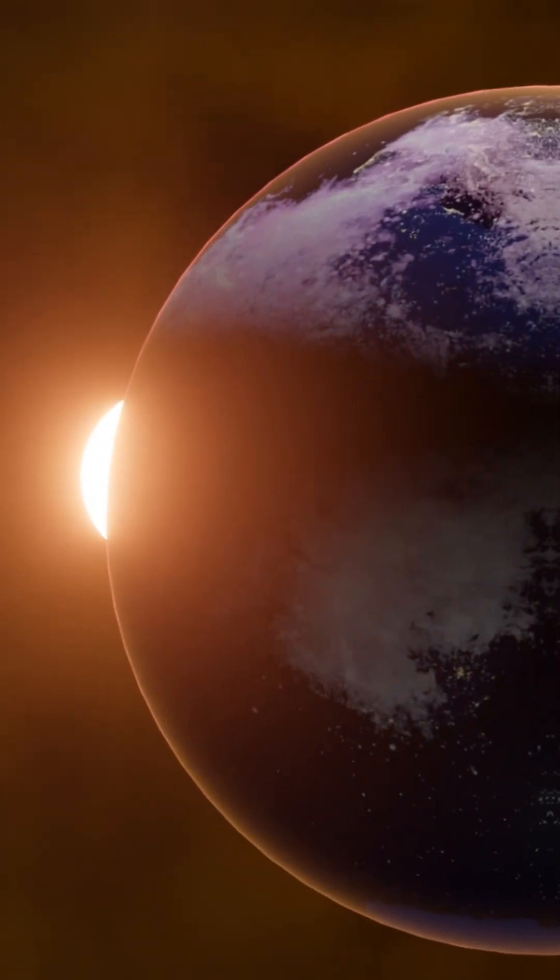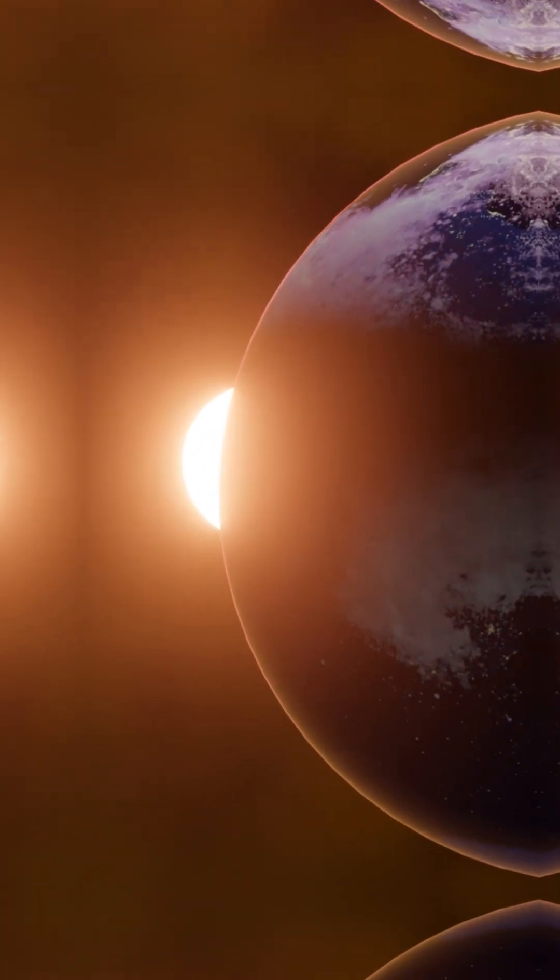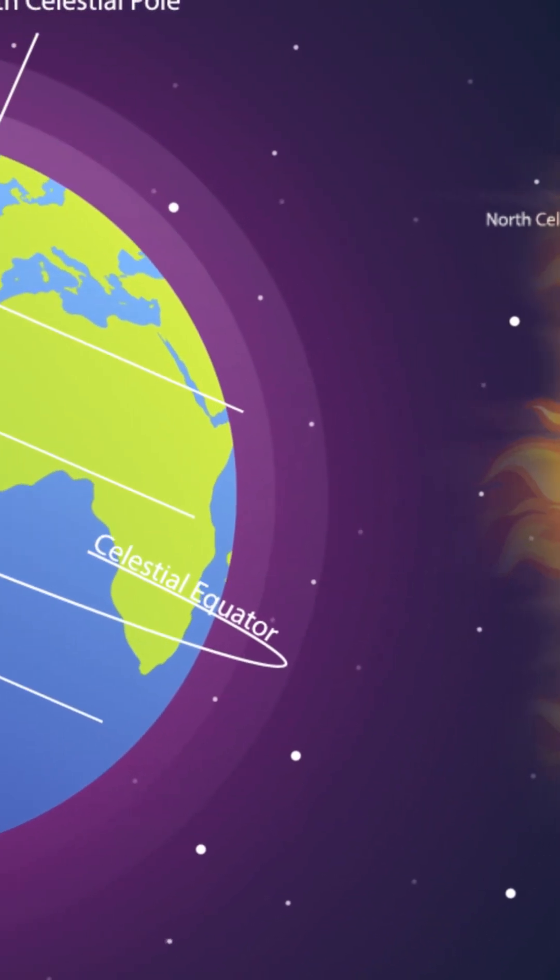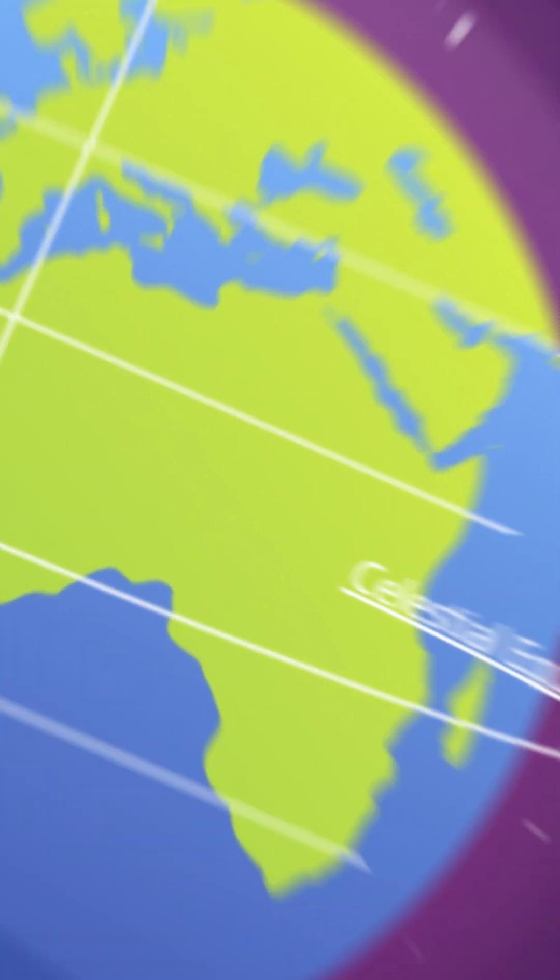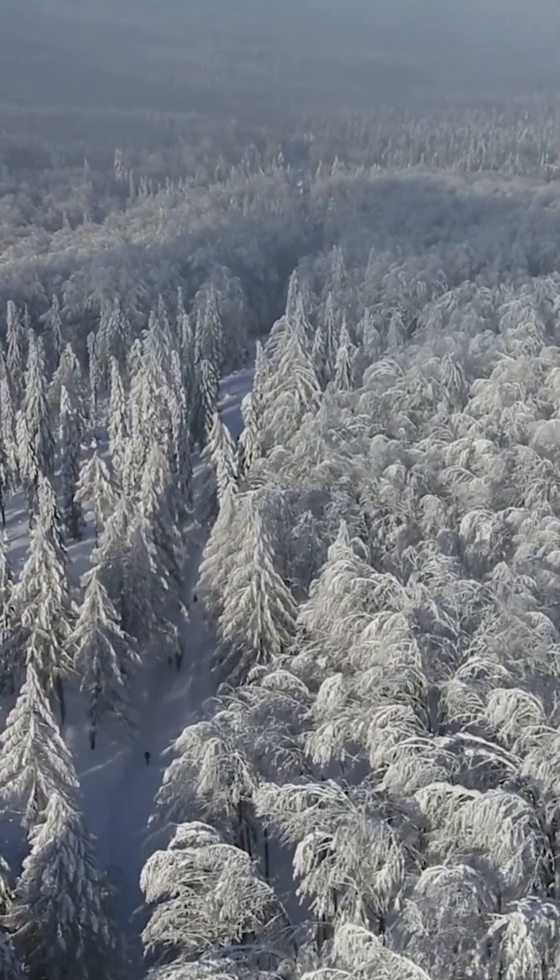In summer, your part of Earth is tilted toward the sun, giving you longer days and warmer temperatures. In winter, it's tilted away, so you get less sunlight and colder days.